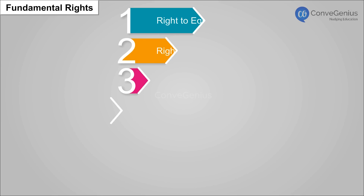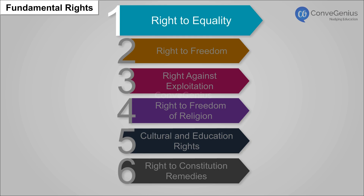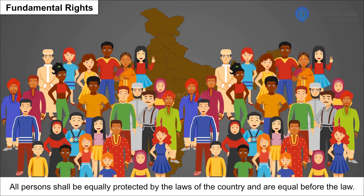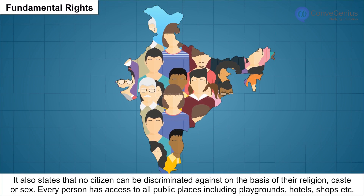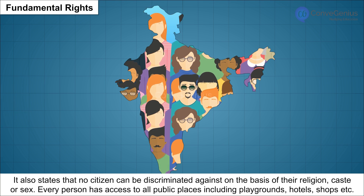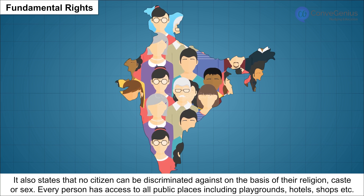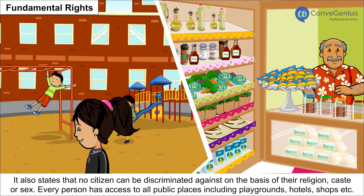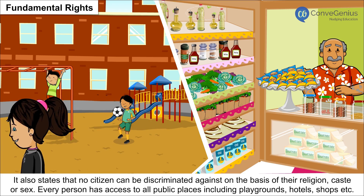There are six fundamental rights in the Indian Constitution. 1. Right to Equality: All persons shall be equally protected by the laws of the country and are equal before the law. No citizen can be discriminated against on the basis of their religion, caste or sex. Every person has access to all public places, including playgrounds, hotels, shops, etc.